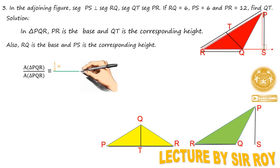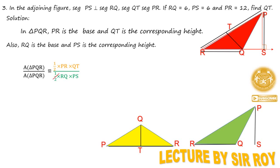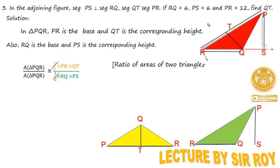Triangle PQR = (1/2) × base × height। Yellow triangle का base PR है, height QT है। Green triangle का base RQ है, height PS है। Numerator और denominator में जो चीज़ same होती है वो कट जाती है — तो 1/2 कट गया। बचा: Triangle PQR / Triangle PQR = (PR × QT) / (RQ × PS)।